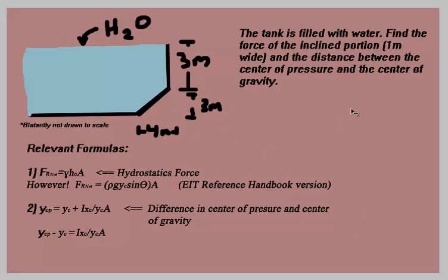Number two is the difference in center of pressure and center of gravity formula. This is given as Y sub CP equals Y C plus I sub X sub C divided by Y sub C times A. Y is for the center of pressure. This is the center of gravity. This is the moment of inertia around the axis X.